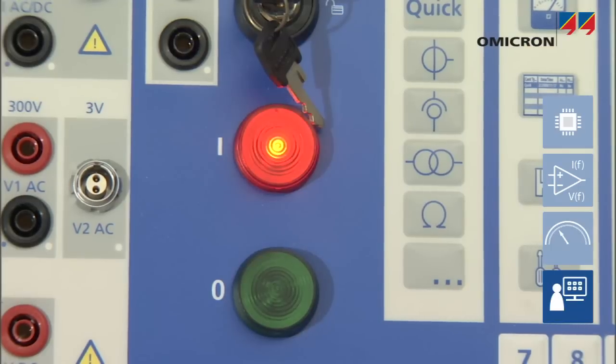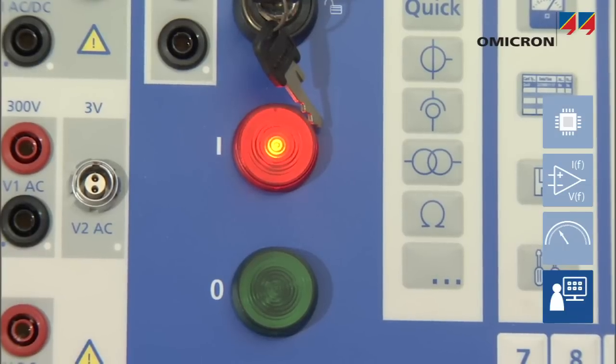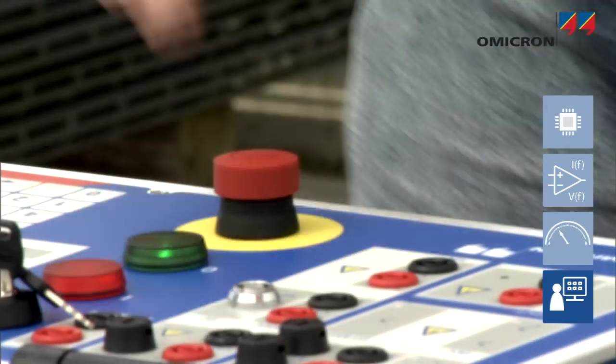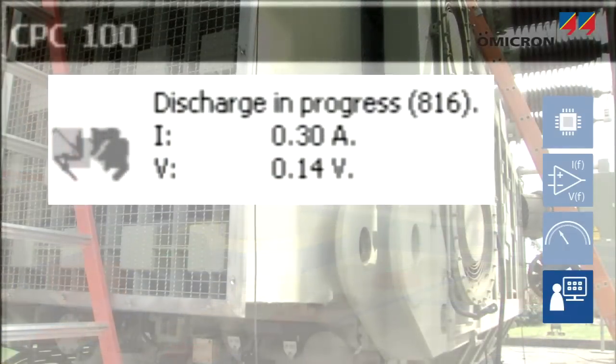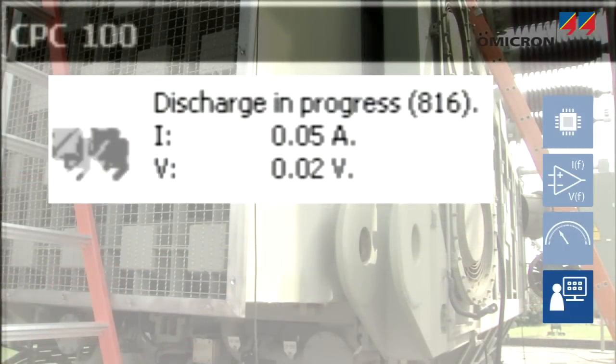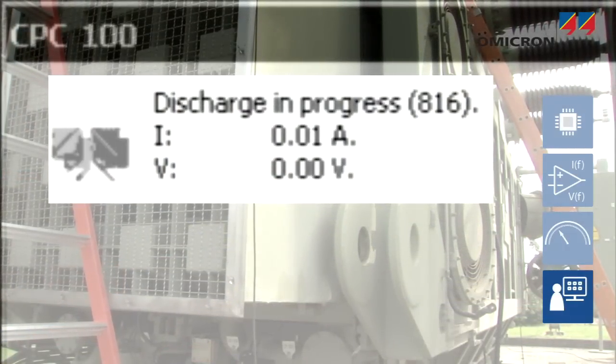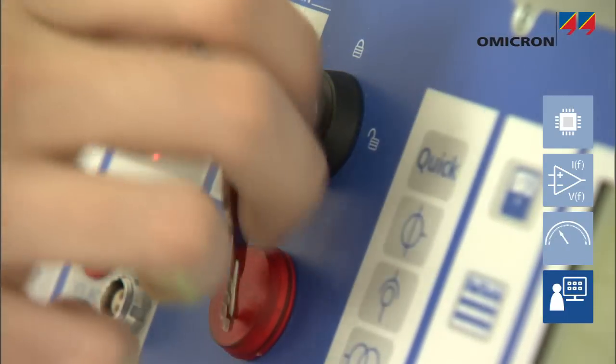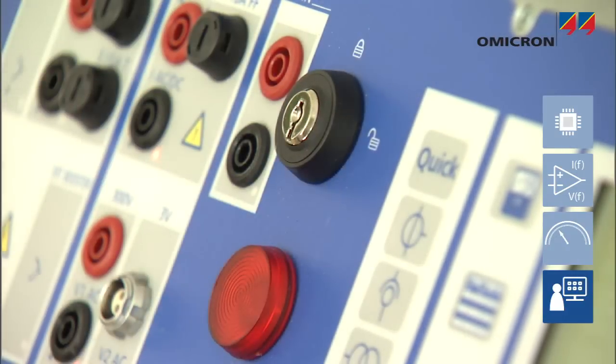Flashing lights on the front panel clearly indicate the injection of voltage or current. An emergency off button immediately stops all injection and discharges the energy stored in the test object, such as a transformer winding. The CPC can also be locked to prevent unintended activation.